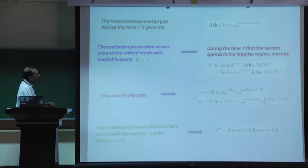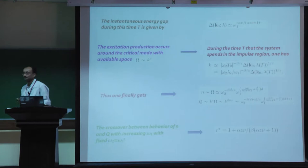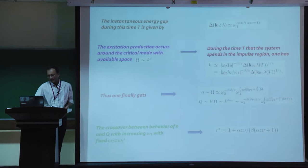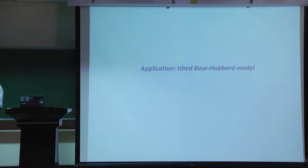The crossover behavior occurs when the two powers are equated, giving r* = (1 + alpha*z*nu) / (beta * (alpha*z*nu + 1)), which reduces to 3/2 when alpha = z*nu = beta = 1. This is a generic result for the two-rate protocol.